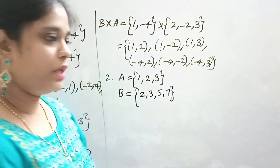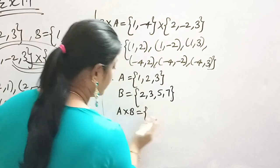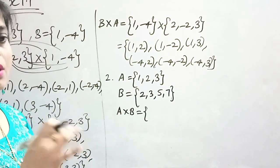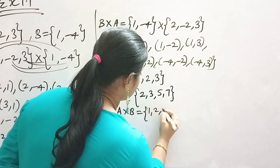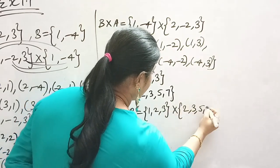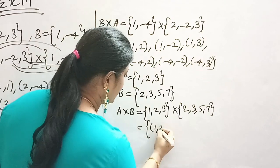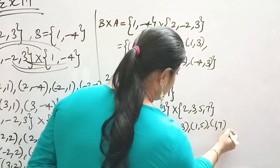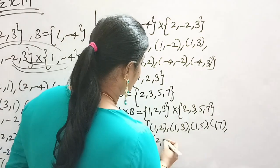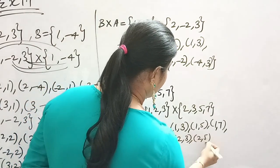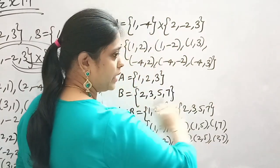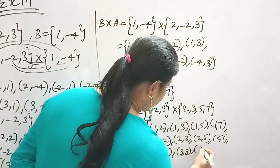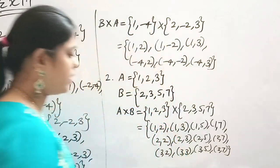They are asking A cross B and B cross A. So A set crossed with B set. A cross B: the ordered pairs are (1,2), (1,3), (1,5), (1,7), (2,2), (2,3), (2,5), (2,7), (3,2), (3,3), (3,5), (3,7). This is your A cross B.